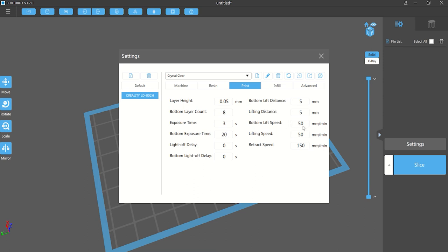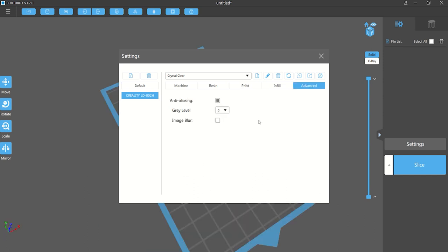I might make the rise time the same as the R. The bottom lift speed I'll set that to 50 and I'll set the regular lifting speed to about 62. Retract speed 150. Bottom layer count will make four and we've got anti-aliasing on.